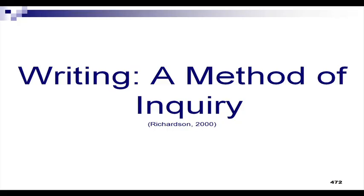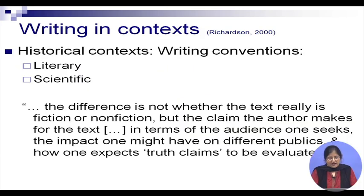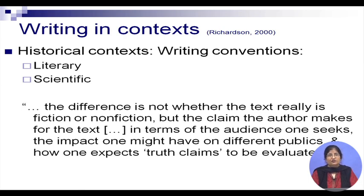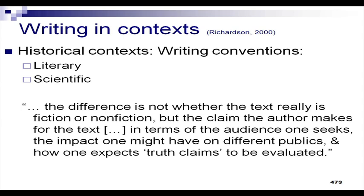Writing is called reflexive — it feeds into itself and helps us clarify whatever we are talking about. This is from a paper by Richardson in the Handbook of Qualitative Research Methods. Richardson says there are two broad categories of contexts in which we write: literary and scientific contexts. The difference is not whether the text is fiction or non-fiction, but the claim the author makes for the text in terms of the audience one seeks, the impact one might have on different publics, and how one expects truth claims to be evaluated.